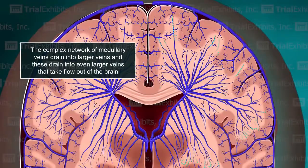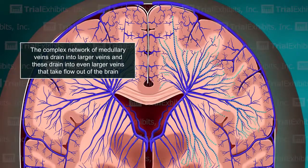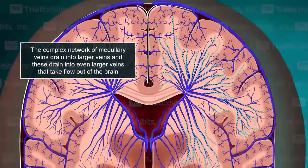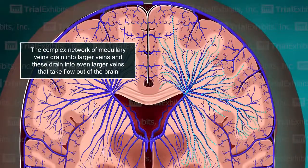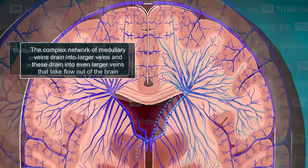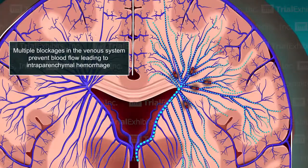Our client claimed that these areas of hemorrhage represented a classic distribution seen in cases of deep medullary thrombosis, and that the hemorrhages developed well before birth.